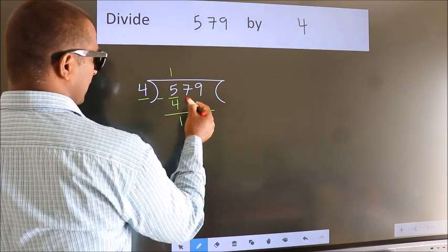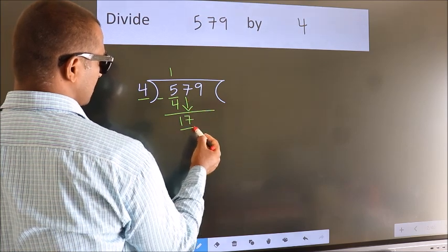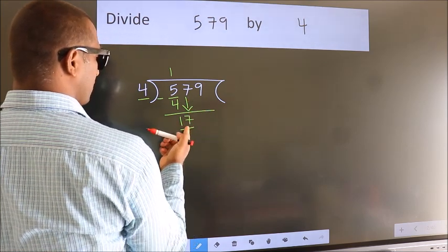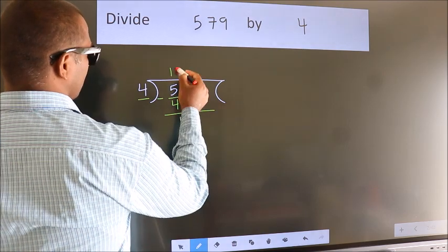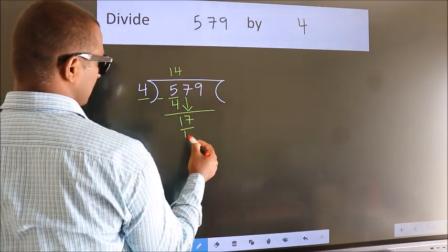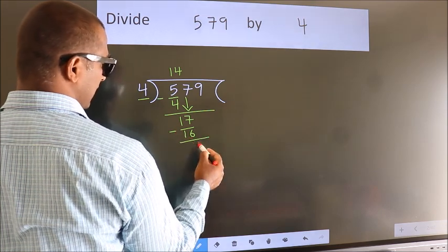After this, bring down the beside number. So, 7 down. So, 17. A number close to 17 in the 4 table is 4 fours 16. Now, we subtract. We get 1.